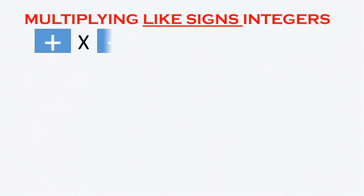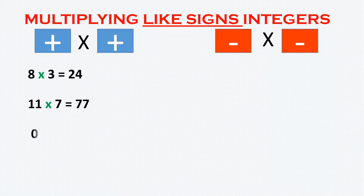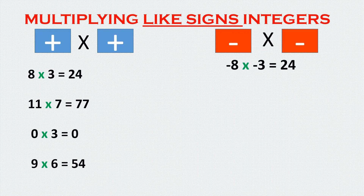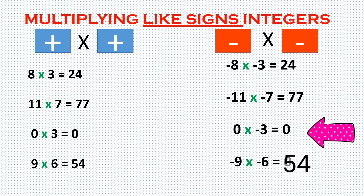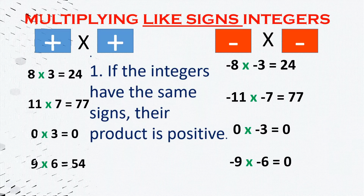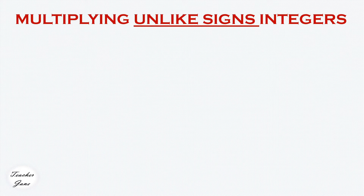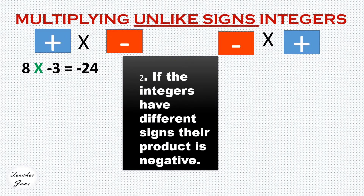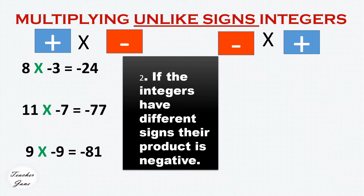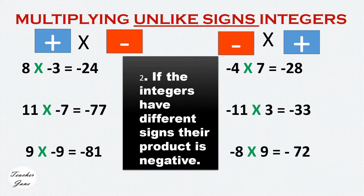In multiplying like signs integers — positive times a positive, or negative times a negative — we are just multiplying the numbers, and the product is always positive. Remember that when multiplying by zero, the product is always zero. In multiplying unlike signs integers — positive times a negative, or negative times a positive — if the integers have different signs, the product is always negative.